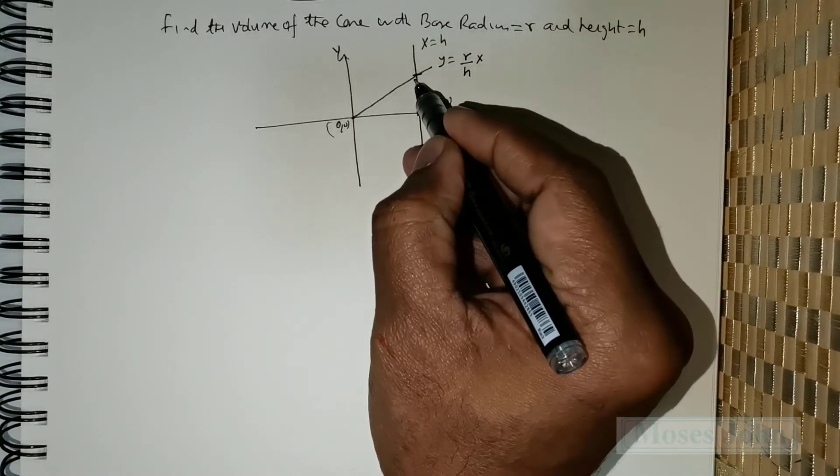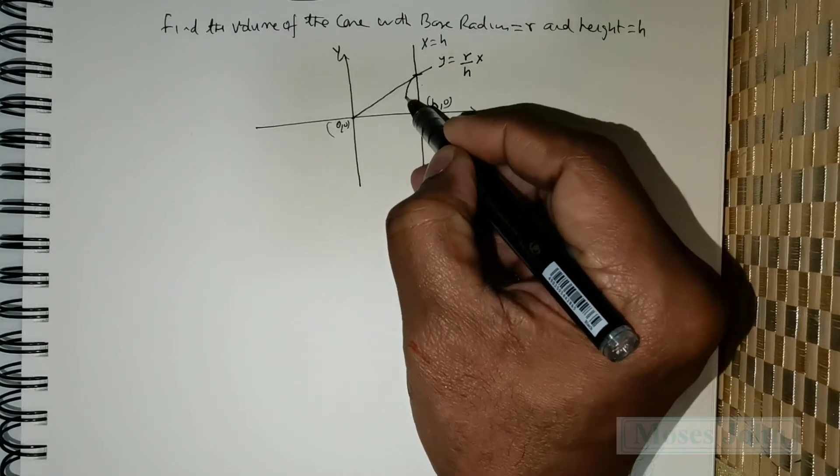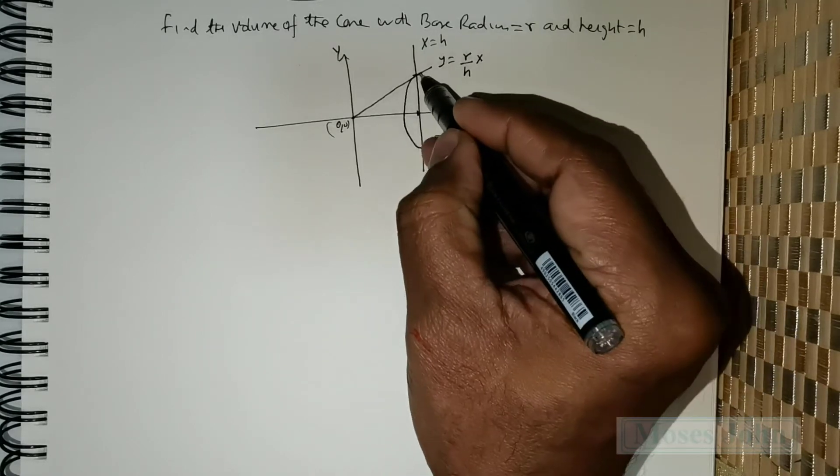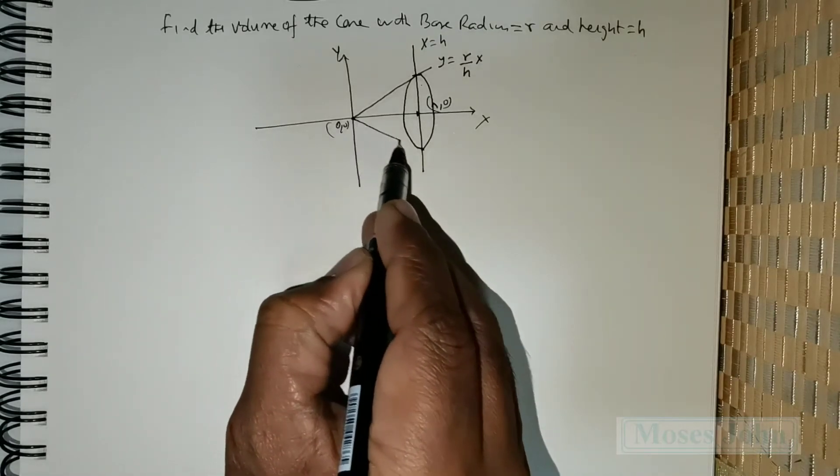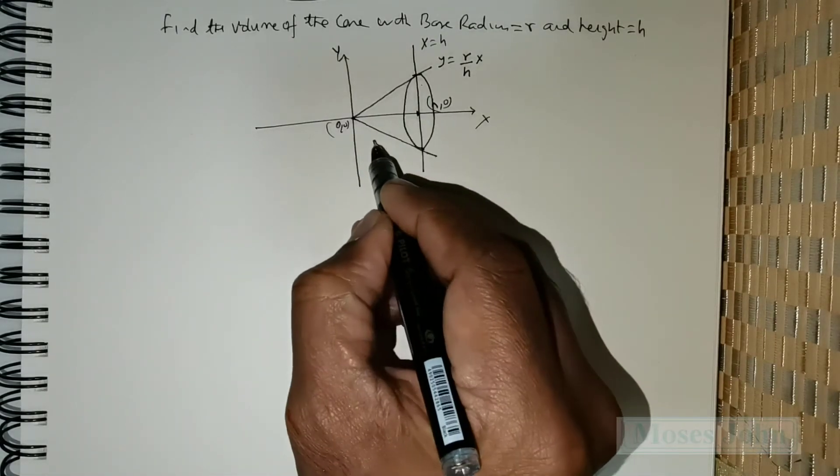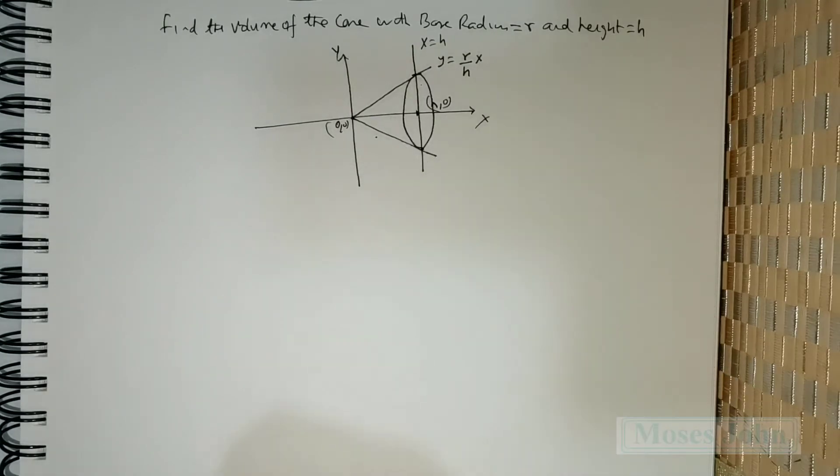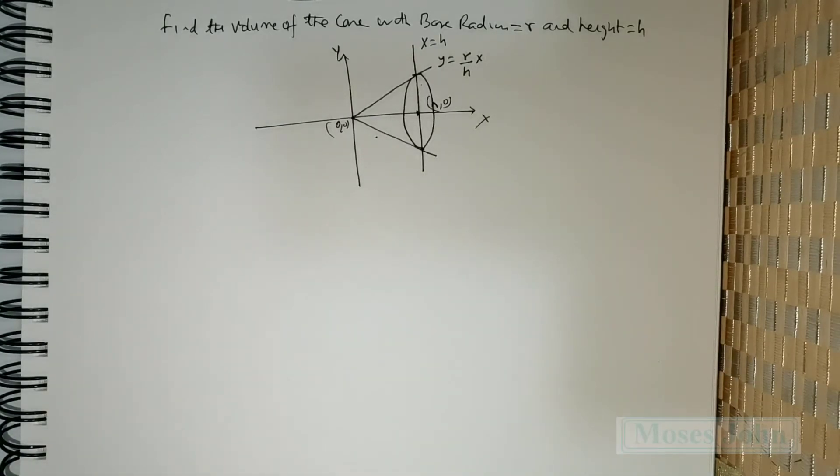Now, if you revolve it, you will be generating the cone, and that is the required shape whose volume we need to find.